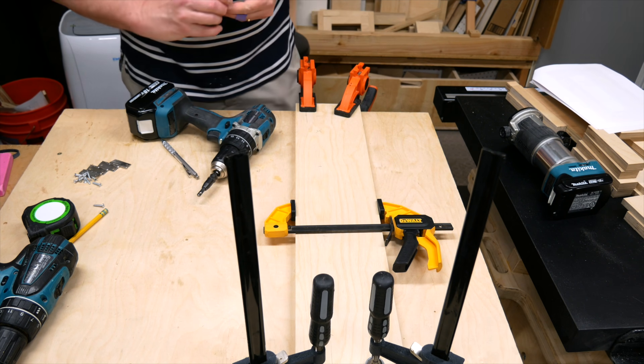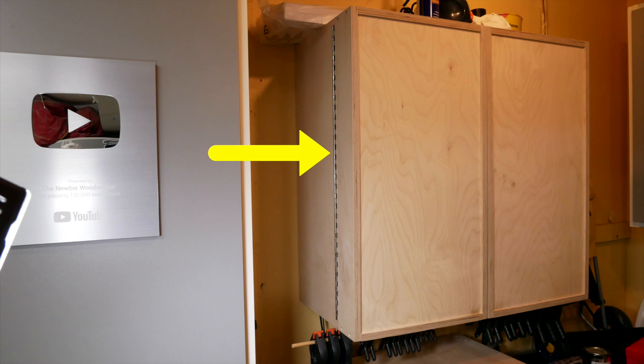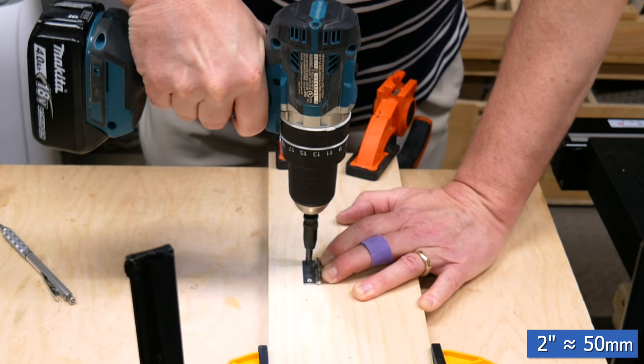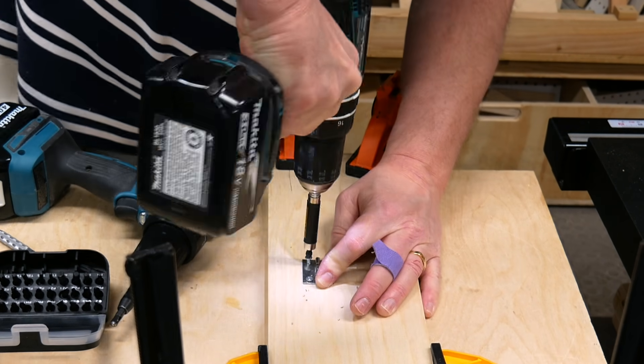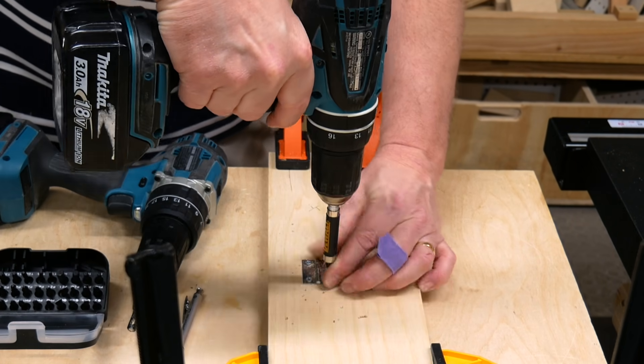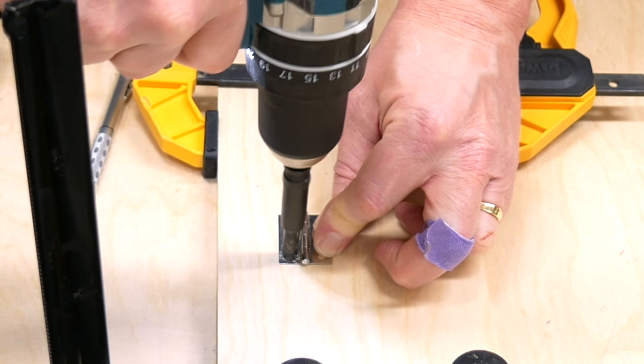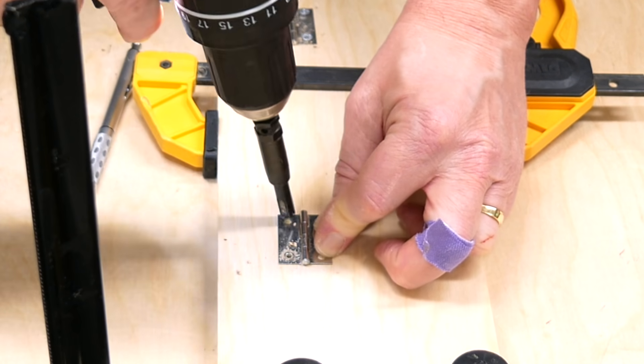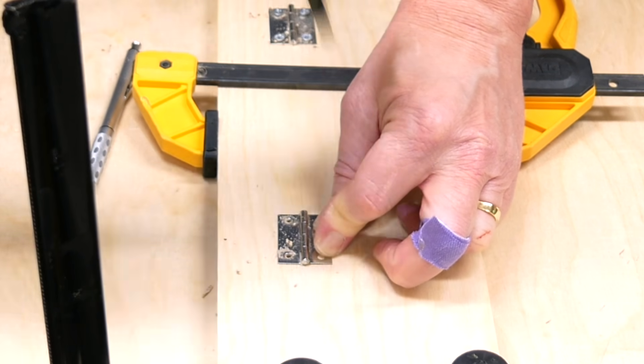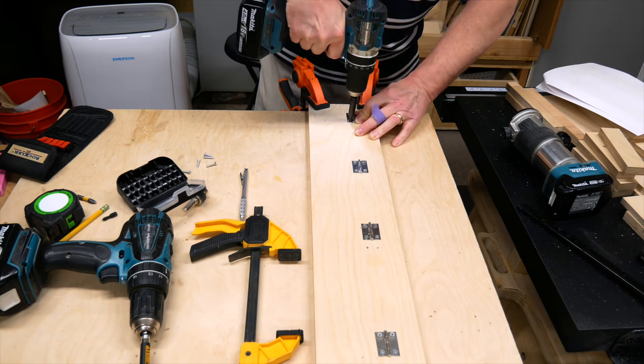Now it's time to attach the hinges. You could use a piano hinge, which is a long continuous hinge like I used in my shop cabinet. But I have a bunch of these 2 inch hinges lying around, and they work just fine. I used 4, but 3 are probably enough. I'm using a self-centering drill bit to drill the pilot holes. I'll put a link to them in the description below. Try to keep the sides together so there's no gaps.